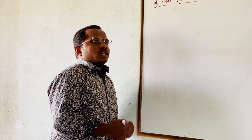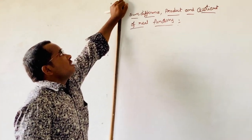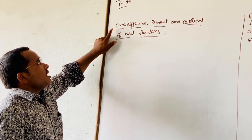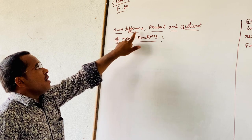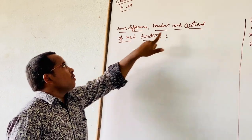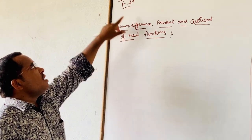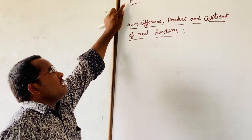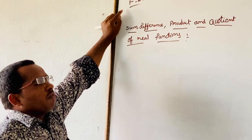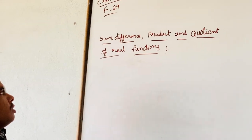Good morning. Today's lesson is the seventh class. The topic is sum, difference, product, and quotient of real functions, present on page number F29.